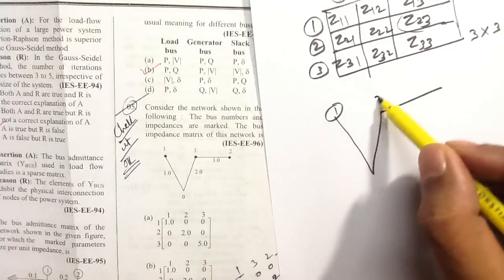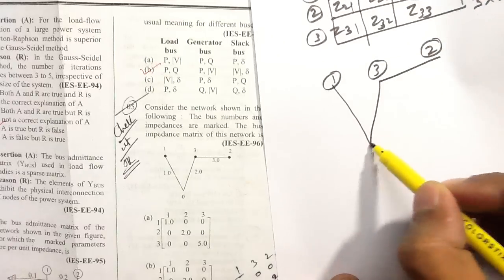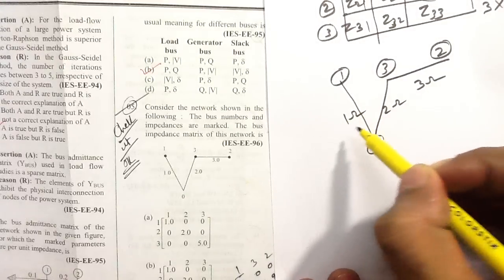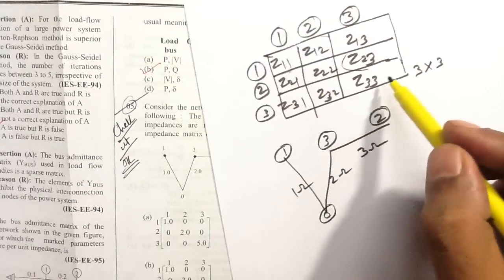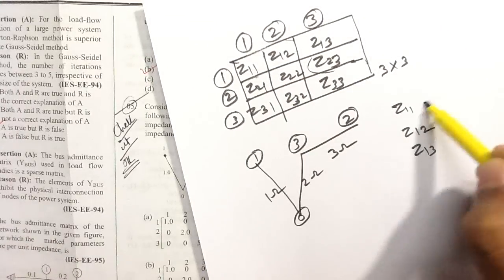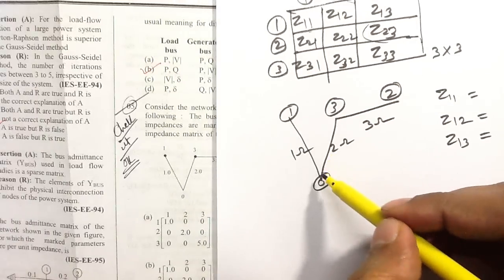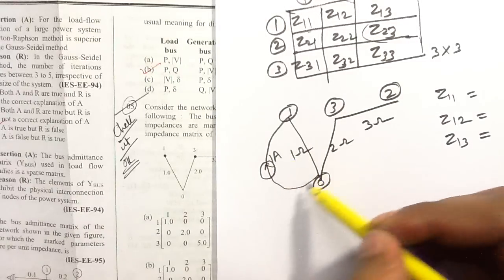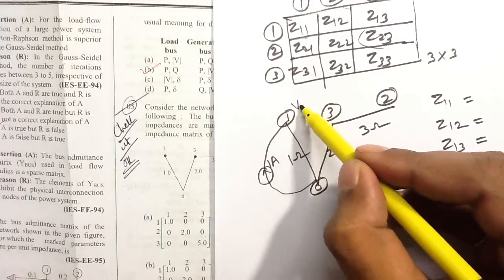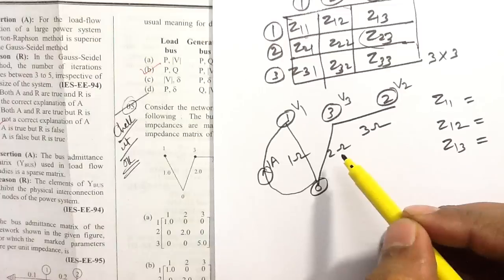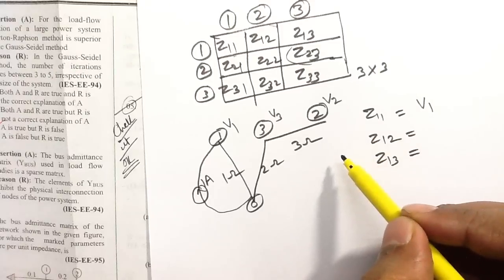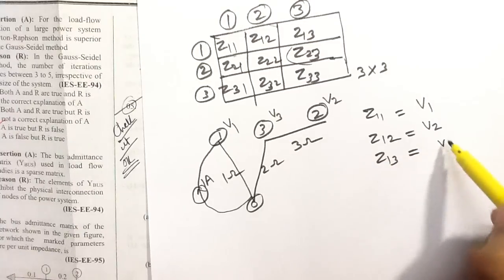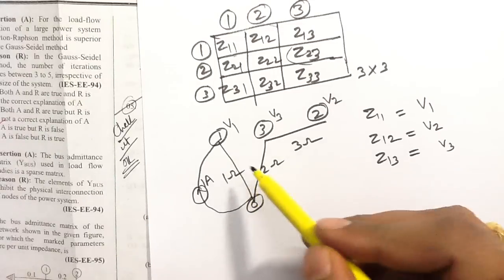This is the network: bus number 1, bus number 2, bus number 3, and the reference bus. The impedances are 1 ohm, 2 ohm, and 3 ohm. To find all elements in the first row, we inject a 1 ampere current source to bus number 1. We then find bus 1 voltage (= Z11), bus 2 voltage (= Z12), and bus 3 voltage (= Z13).